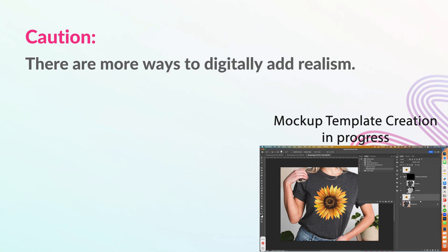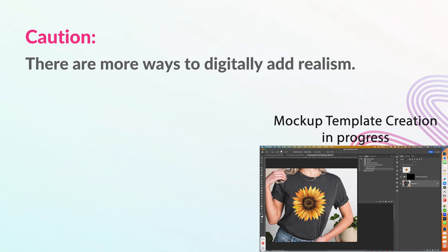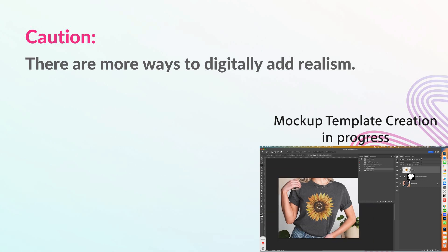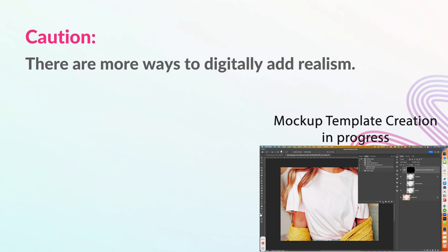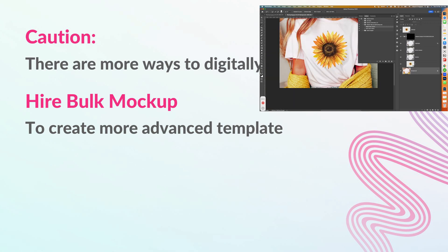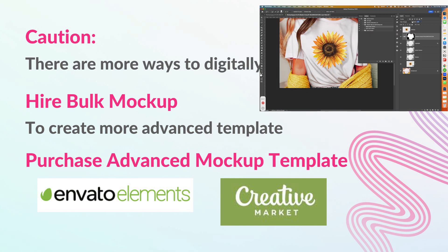The process I showed you is one of the simplest ways to add realism to your t-shirt, designed to be easy to understand even for a novice. There are more advanced ways involving Photoshop Liquify filters and displacement maps, but those require advanced Photoshop skills. If you wish to create such advanced templates, you can hire a team or purchase them from sites like Envato Elements or CreativeMarket.com. I have a few recommendations in the description that you can check.